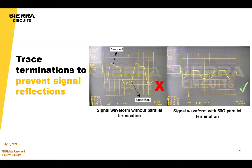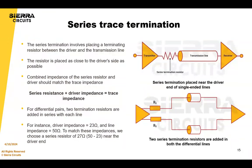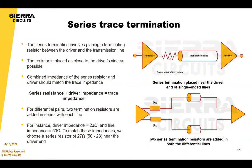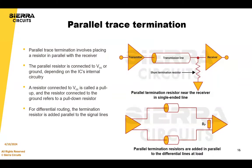Next we're switching topics to trace terminations to prevent signal reflections. First, series trace termination involves placing a terminating resistor between the driver and the transmission line. Place the series resistors close to the driver's side and choose a value so the combined impedance of the resistor and driver matches the trace impedance. For example, if the driver impedance is 23 ohms and the line impedance is 50 ohms, implement a series resistor of 27 ohms near the driver. The other option is parallel trace impedance, where a shunt resistor is added in parallel with the receiver — a pull-up resistor connected to the power supply, or a pull-down resistor connected to ground.